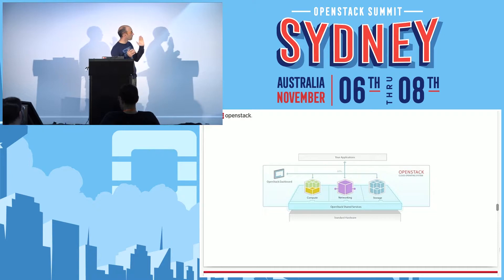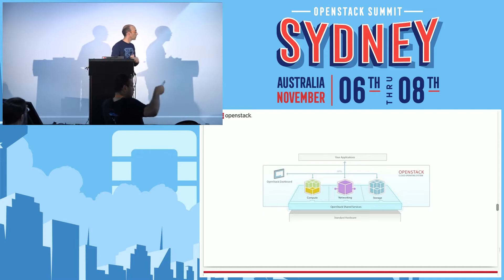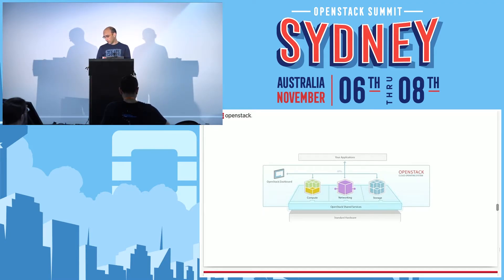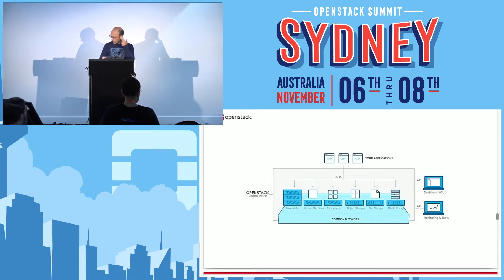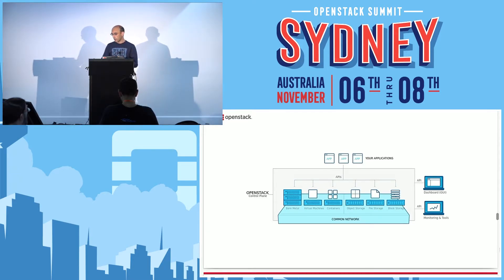The first one tried to show that you have compute, networking, and storage as the key components of an infrastructure-as-a-service solution with OpenStack shared services. It lives between your application and standard hardware. It's pretty good but doesn't convey much information beyond the definition of what infrastructure as a service actually looks like. The current version tries to show different things but doesn't do a perfect job. It shows all types of compute, all types of storage, connected with common networking so you can access any of them from any of them — but it's still a bit confusing.